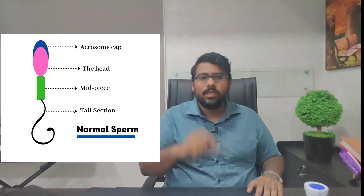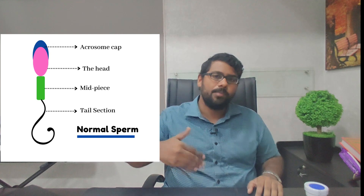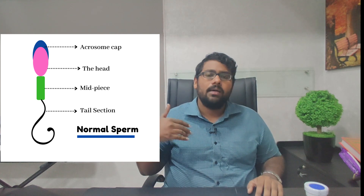After assessing sperm morphology, we give a report. If the sample is normal and ticks all the boxes for normal reference ranges, it is called normospermia. If motility is slow it's asthenospermia; if the count is low it's oligospermia. There are different terms, and we will be making many more videos on these topics going forward.